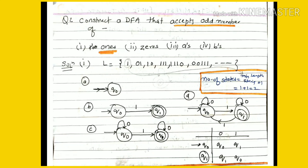First, if we construct a DFA for odd number of 1s, we need to find which strings belong to this language. Strings with an odd number of 1s include: a single '1', '0 1' (one 1), '1 0' (one 1), '1 1 1' (three 1s), and so on. The strings can have any even number of 0s, but must have an odd number of 1s.